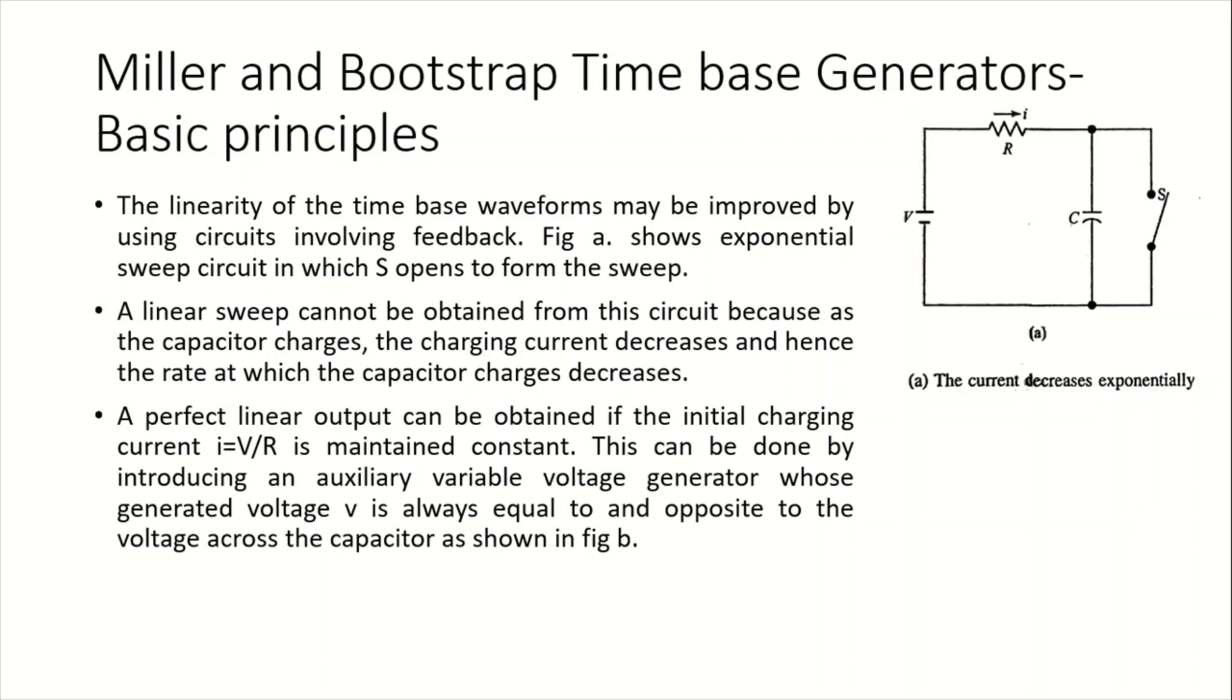If these two get cancelled, the current will be constant in the circuit as shown in this figure. The voltage generator voltage V and the capacitor voltage Vc developed, these two will always be equal and opposite. When these two cancel, the initial charging current i equals V/R will be maintained constant so that the linear sweep is obtained.